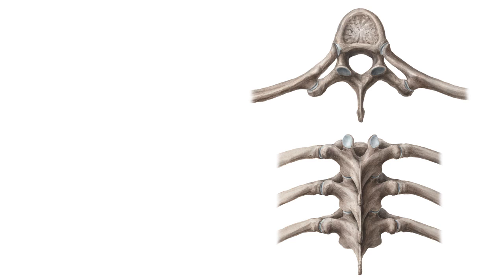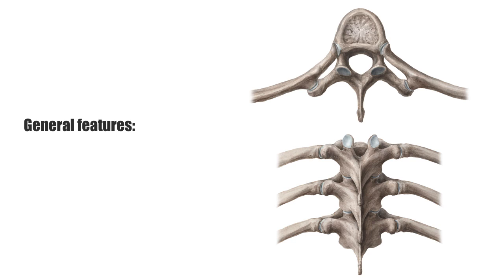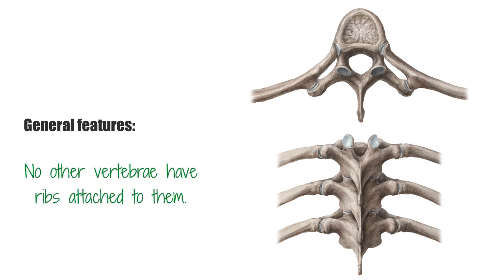For each of the 12 thoracic vertebrae, there is a corresponding pair of ribs attached to them. This is unique, since no other vertebrae have ribs attached to them. Thoracic vertebrae increase in size as they descend towards the lumbar vertebrae, because the lower vertebrae must be able to support more of the body's weight when a person is standing due to the effects of gravity.